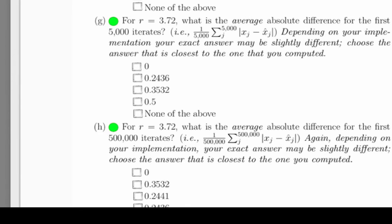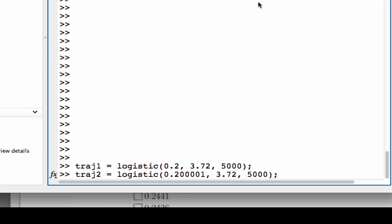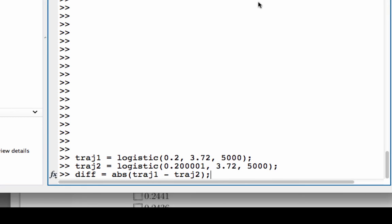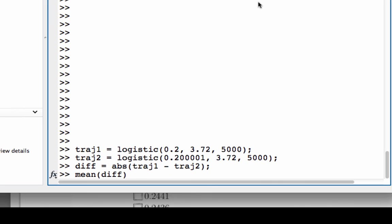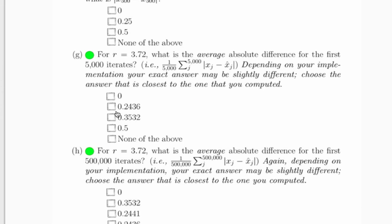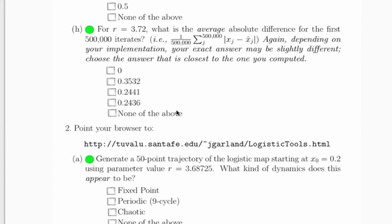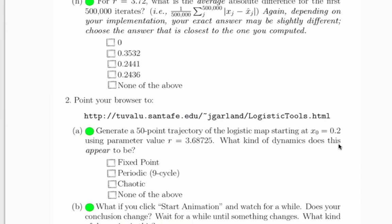Part g of this problem required a little bit more programming. Here's a 5,000 point trajectory at r equals 3.72. Here's a 5,000 point trajectory from a slightly different initial condition at the same r value. Here's a vector containing an element-wise difference of those two trajectories with the absolute value taken. And here's the average of the values in that vector. Let's see which of the answers that corresponds to. Looks like that one. The next problem was about extending that calculation out to 500,000. The answer doesn't change a whole lot, but it is a little different. It's 0.2441. The fact that that difference doesn't change very much between 5,000 and 500,000 points is pretty amazing. What that says is that as the initial conditions move around the chaotic attractor, the average distance between them is pretty much the same over 5,000 points or over 500,000 points. That's a consequence of the combination of sensitive dependence on initial conditions and the bounded, patterned, structured nature of a chaotic attractor.